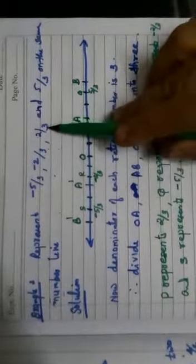Example 2. Represent minus 5 by 3, minus 2 by 3, 2 by 3 and 5 by 3 on the same number line.